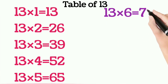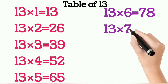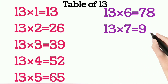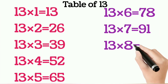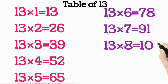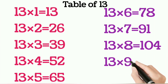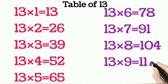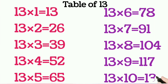Thirteen sixes are seventy-eight, thirteen sevens are ninety-one, thirteen eights are one hundred four, thirteen nines are one hundred seventeen, thirteen tens are one hundred thirty.